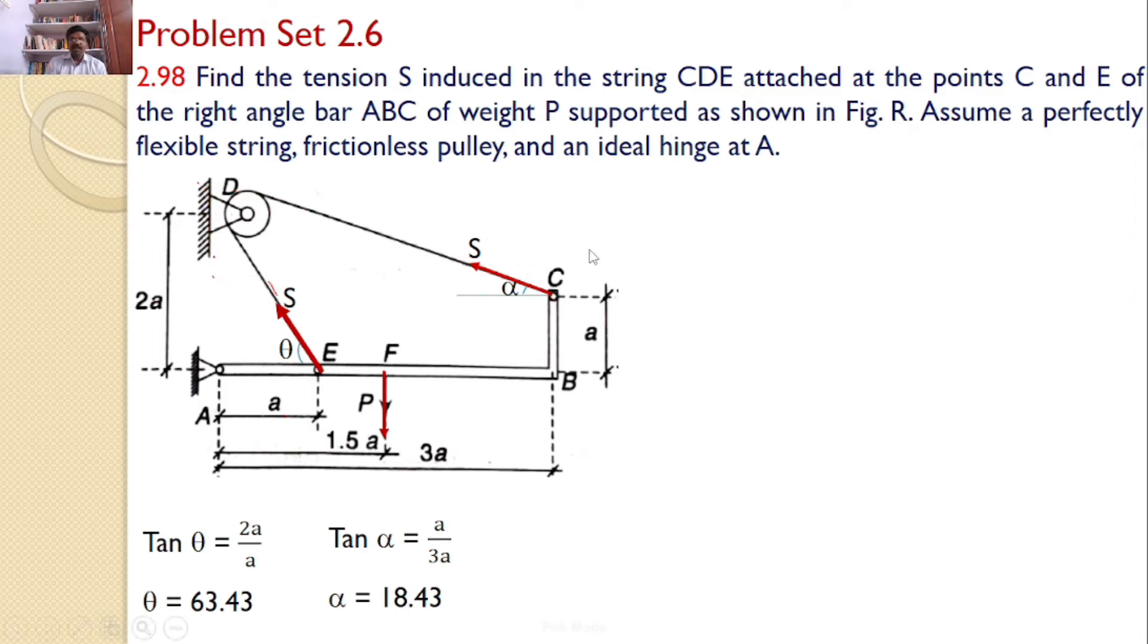So if we consider the free body diagram of the right angled bar ABC only, here I can find a force P, here I can find the force S and here I can find the force S. So this makes an angle theta and this makes an angle alpha.